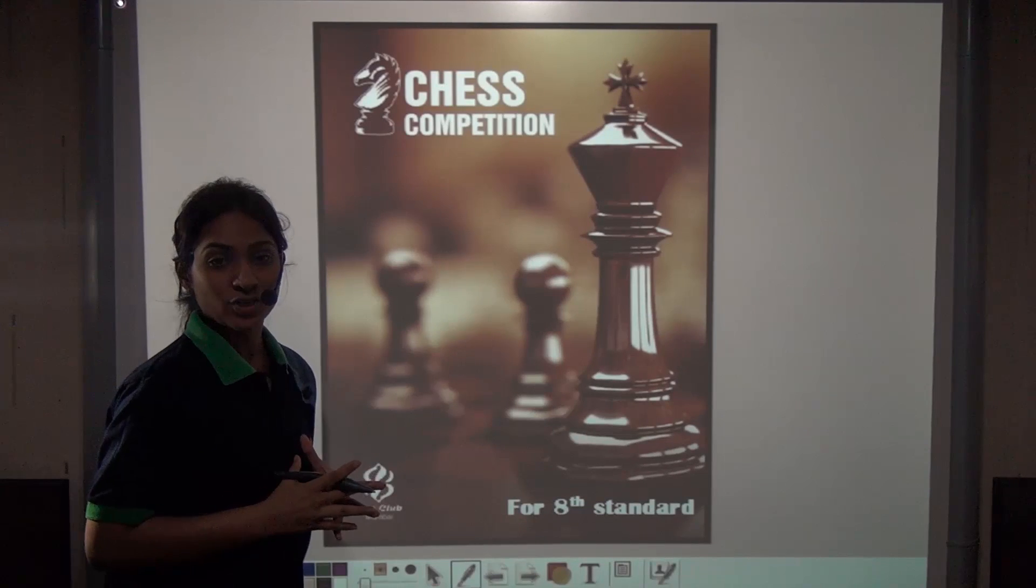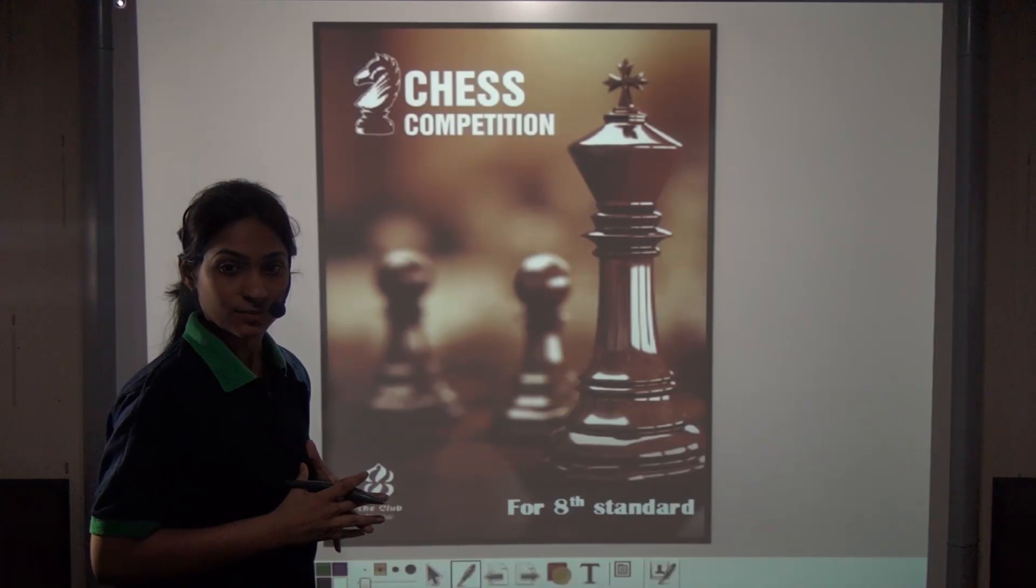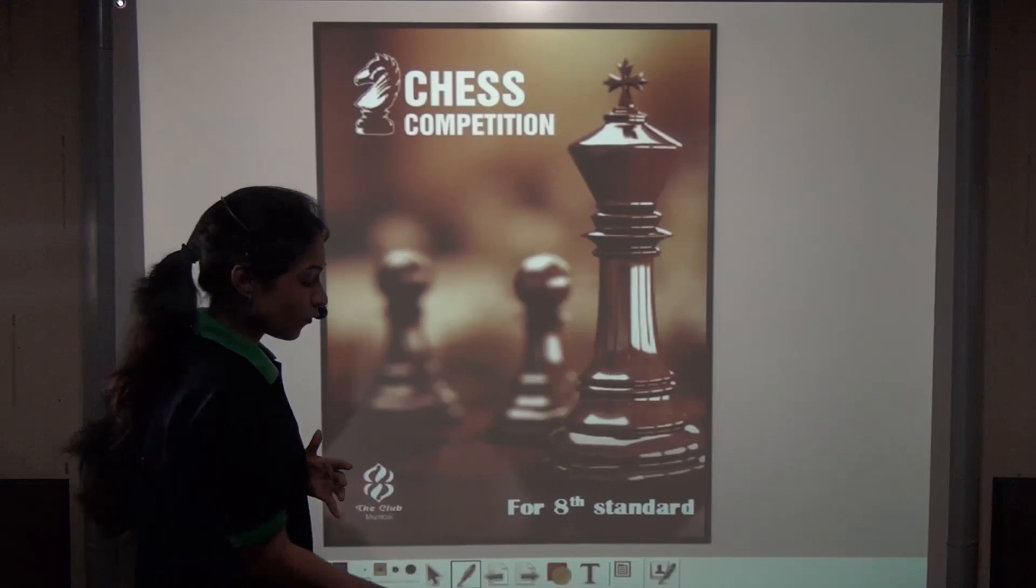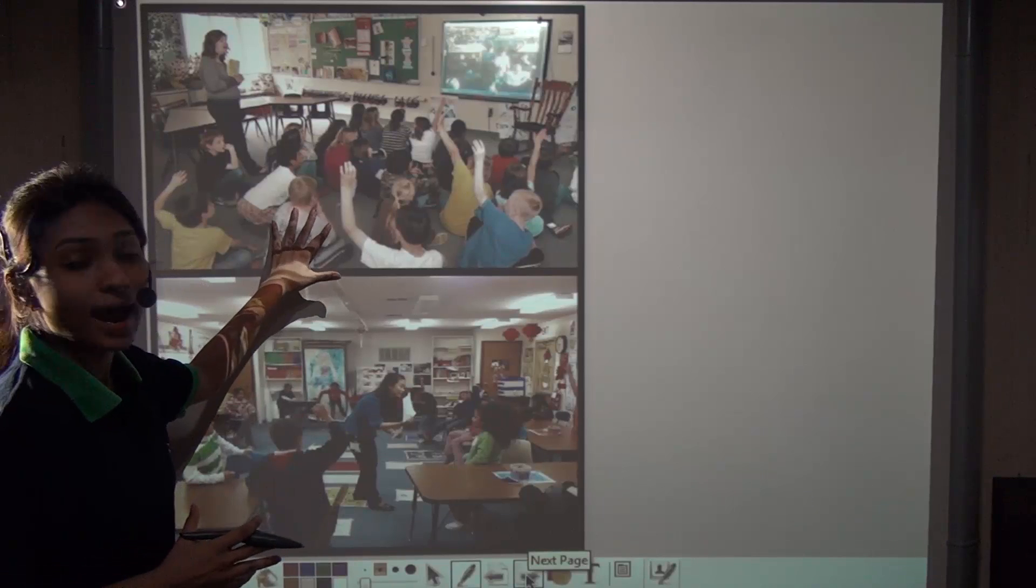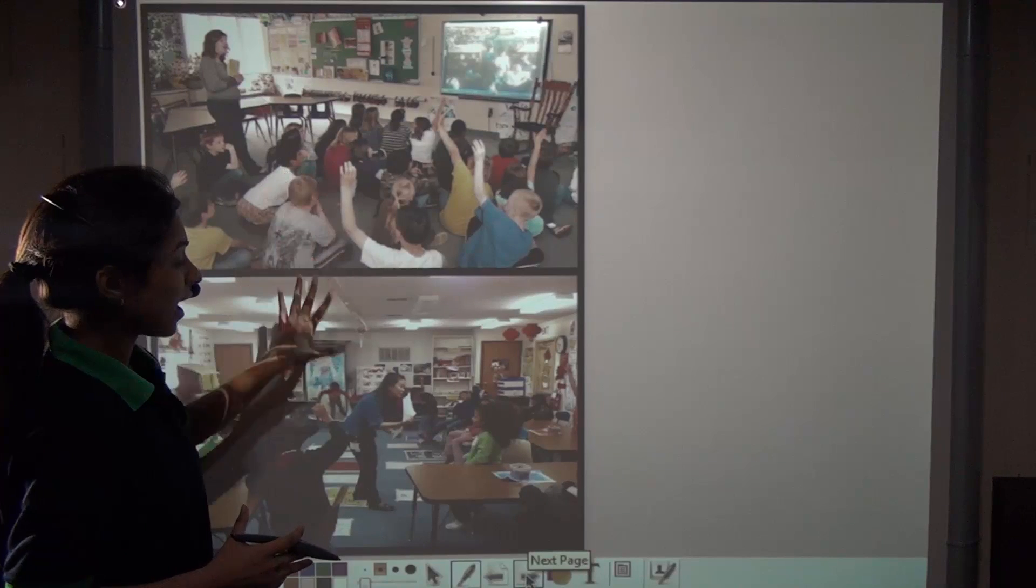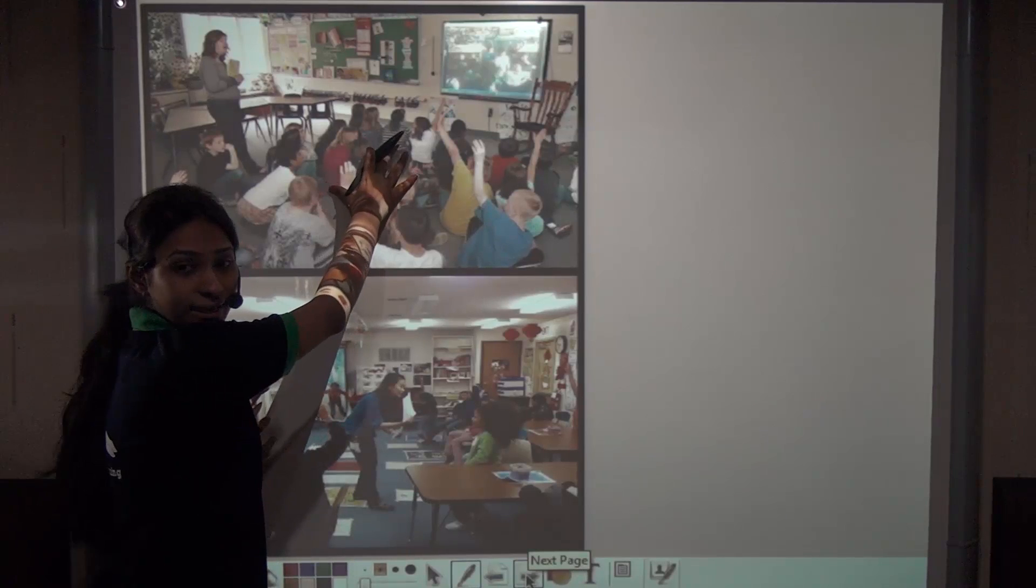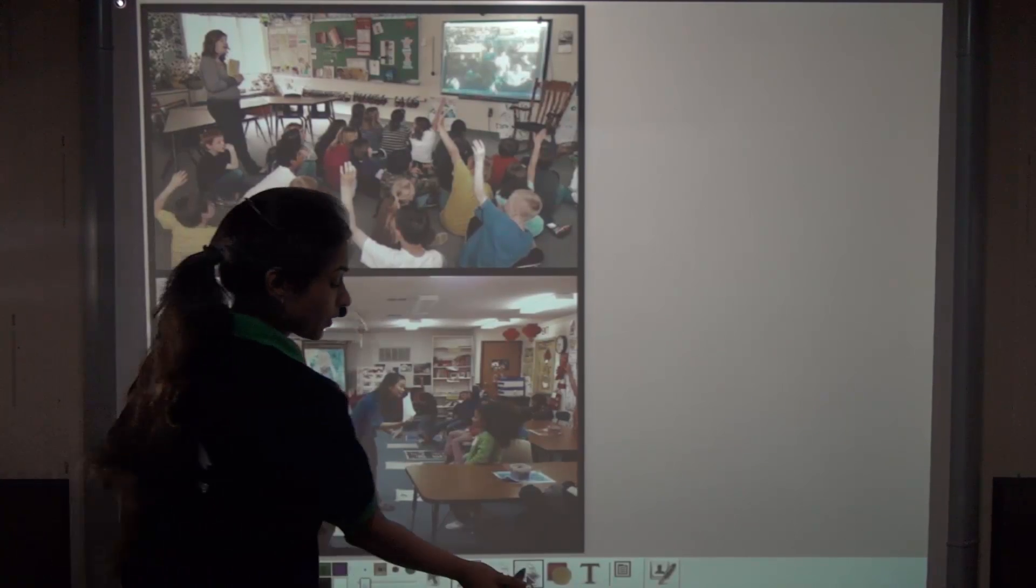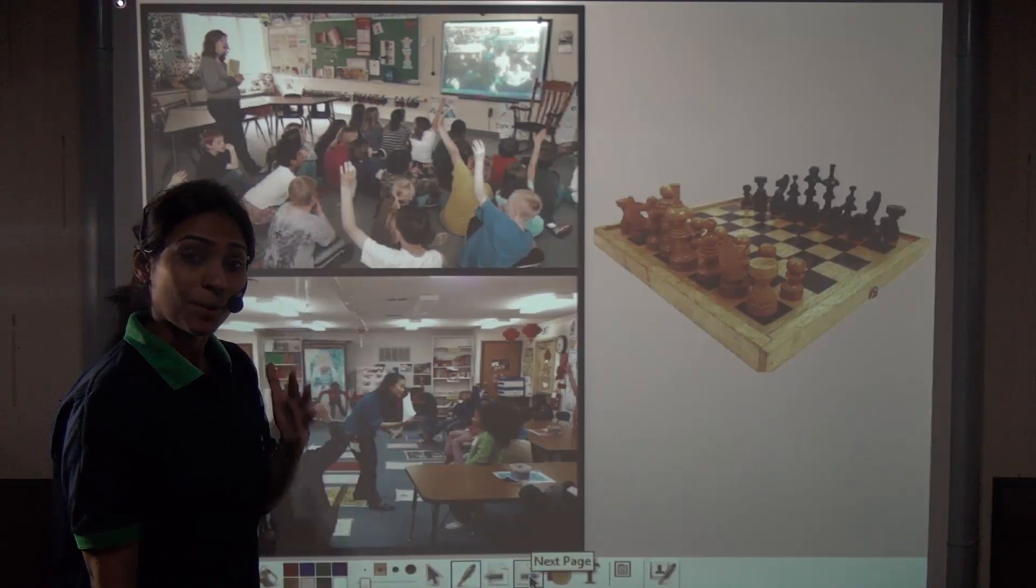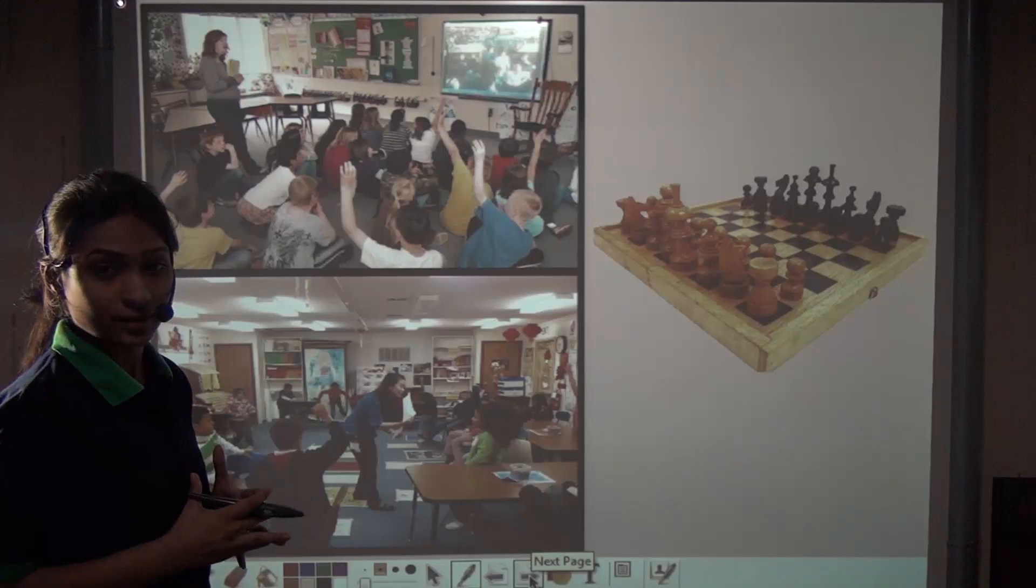Once there was a chess competition organized by a school for students of class 8. But the teachers were confused as to whom to send because class 8 had two sections, 8A and 8B. Either they could send a student from class 8A or a student from 8B, but the student must compulsorily know how to play chess. So now what to do? Whom to send?